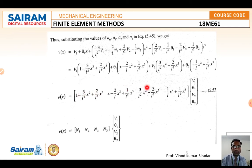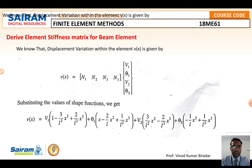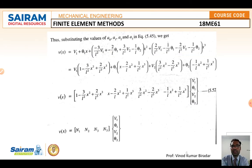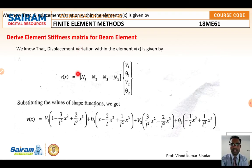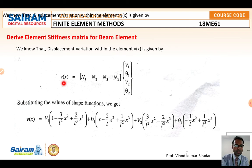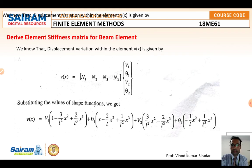Using N1, N2, N3, N4, we now derive the element stiffness matrix for the beam element. The displacement within the element is v(x) = [N1, N2, N3, N4] · {v₁, theta₁, v₂, theta₂}ᵀ. Substituting the shape function expressions and differentiating with respect to x gives dv/dx. Differentiating again yields d²v/dx² and d³v/dx³.